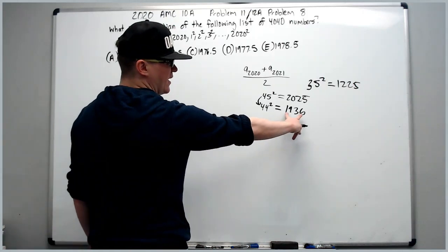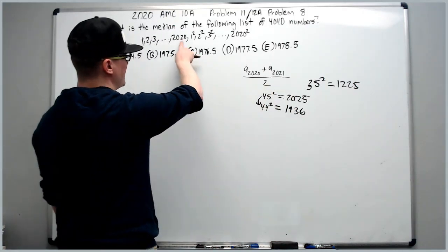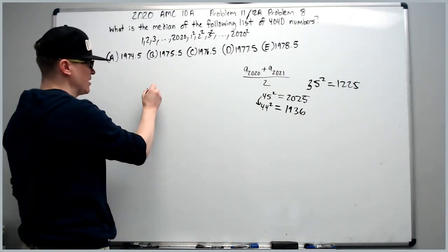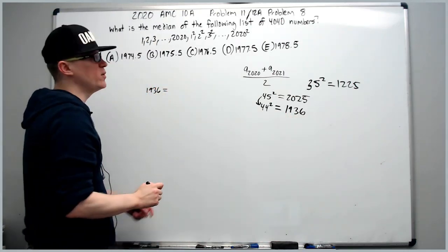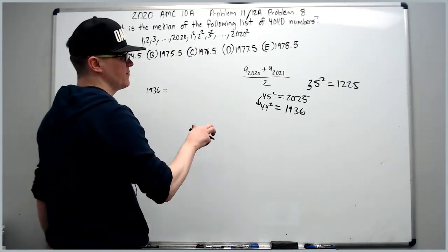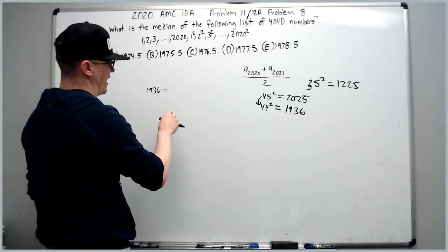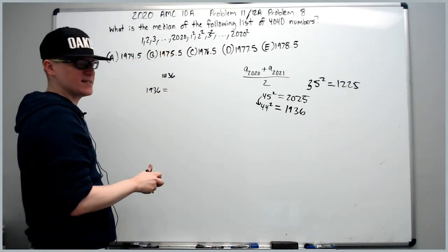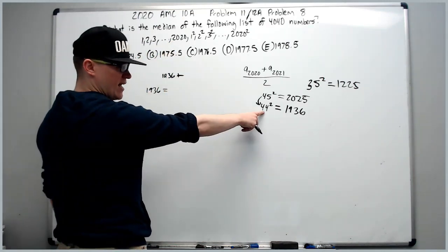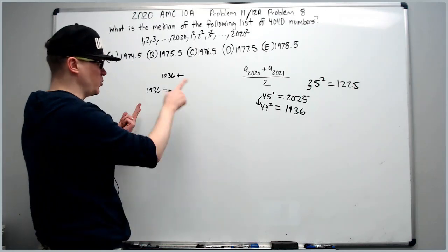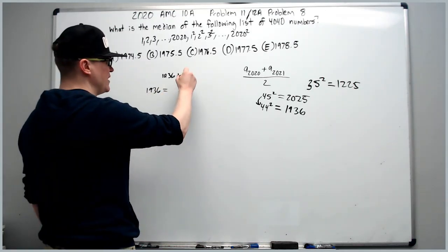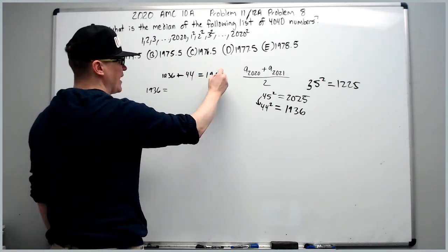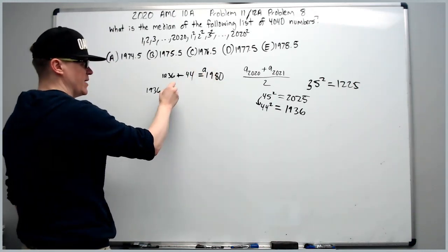So 1936 is less than 2020. When we get to the number 1936, what term number will we be on in our sequence? You're going to have all 1936 integers from 1 to 1936, plus 44 perfect squares which overlap with several of these numbers. So adding 44, we get term number 1980.